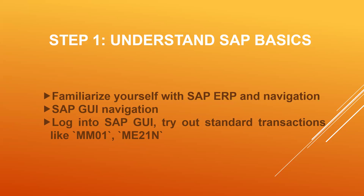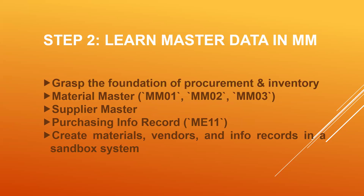Basic level transactions include purchase requisition creation, purchase order creation, and material master creation — MF01 — basic level transactions and how they work. Step two: learn master data in a procurement cycle. Grasp the foundation of procurement and inventory — material master creation, supplier master creation in BP transaction code, purchase info record creation ME11 transaction code, source list creation ME01 transaction code. Get a sandbox login and try to do all this basic master data creation.